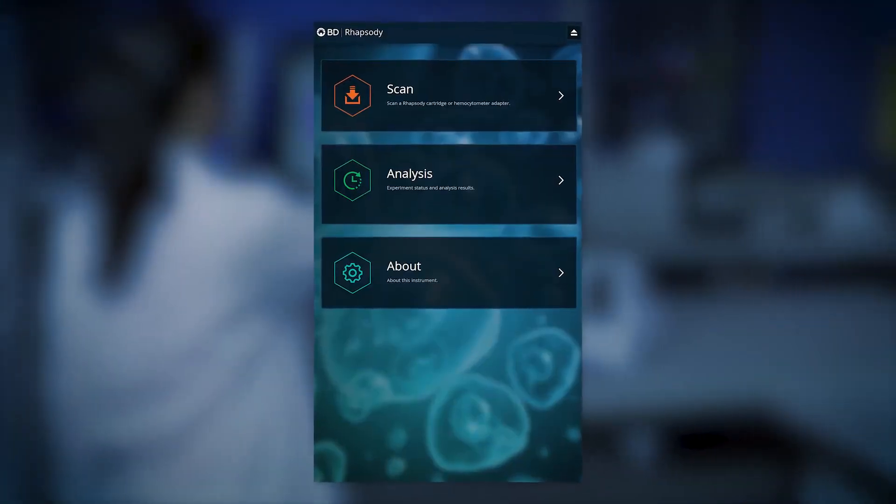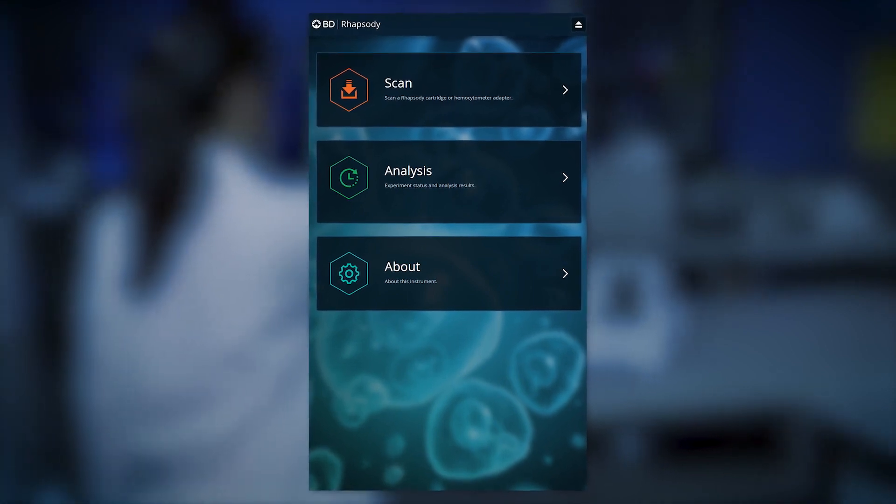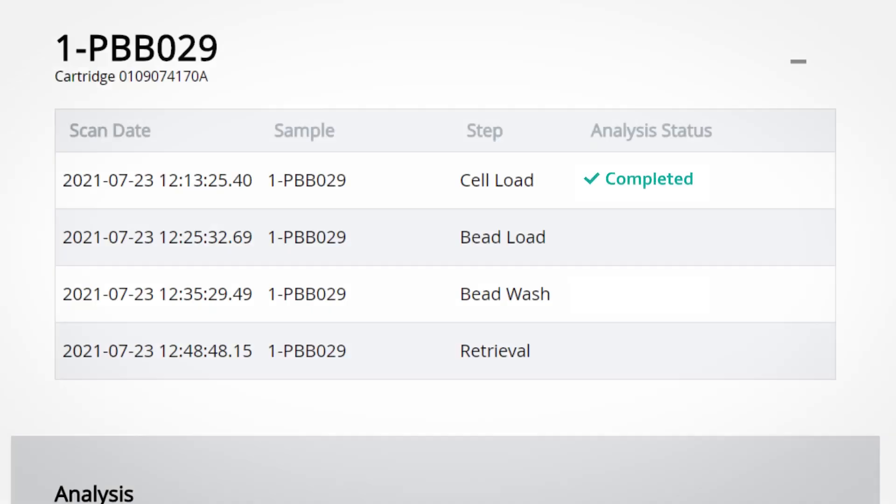The four main steps at which the BD-Rhapsody scanner captures quality metrics are cell loading, bead loading, after bead washing steps, and finally the bead retrieval step.